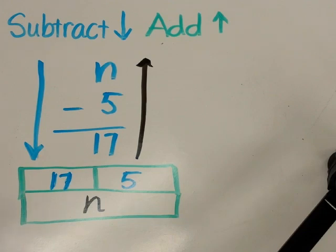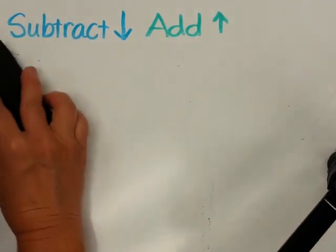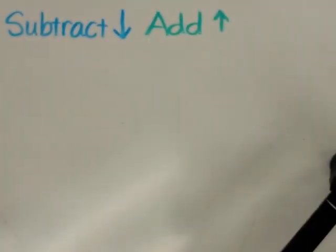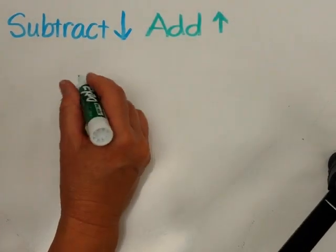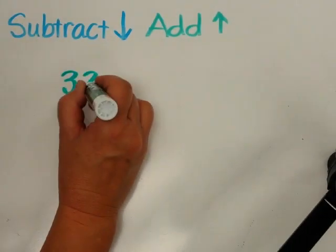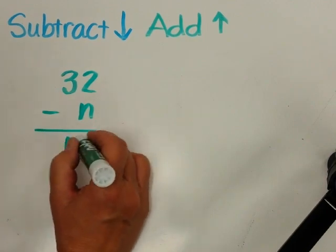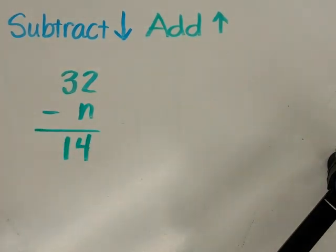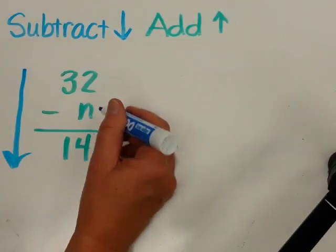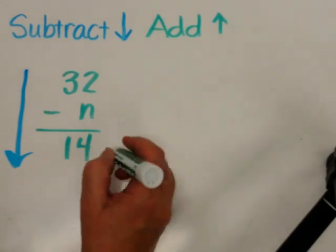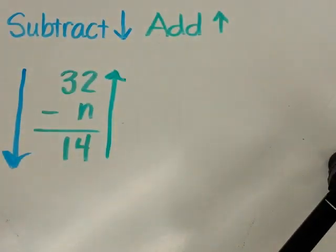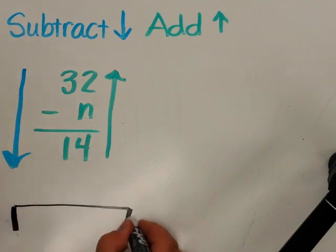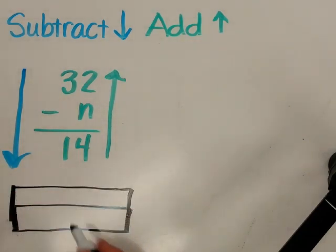So today when you're doing your missing number problems, I'd just like you to try and remember the subtract down or the add up ways of being able to help you remember how to work that problem out. How about if we do just one more that's a little more difficult? Let's see. How about 32 subtract n equals 14? Let's say it both ways. 32 subtract what is 14? Or 14 plus what equals 32?